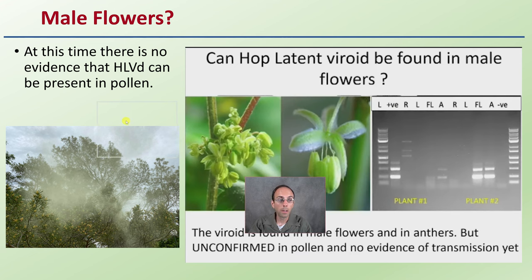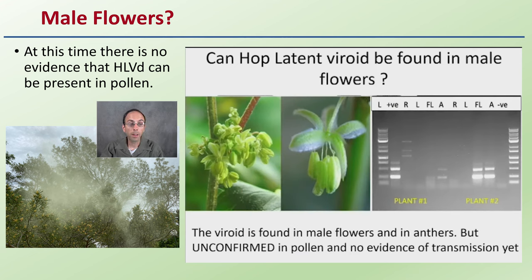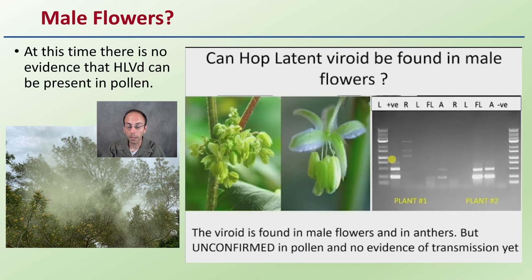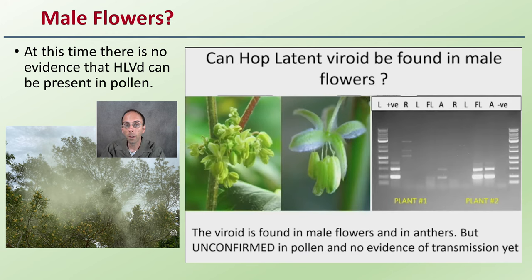Regarding male flowers: at this time, there's no real evidence that hop latent viroid can be present in the pollen itself, but it can be present in the male flower structure and in the anthers. Transmission via pollen is unconfirmed and there's no evidence for it yet — but that doesn't mean it doesn't happen. It's still another reason for concern, even in breeding operations. Removing any plants positive for hop latent viroid from your operation is advised to reduce the overall viroid load.